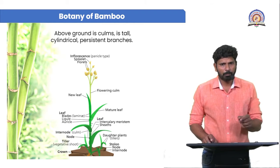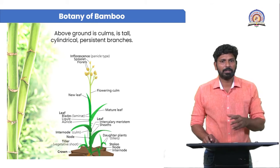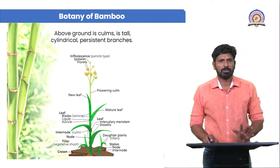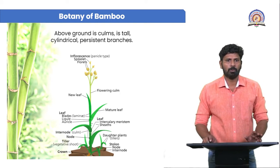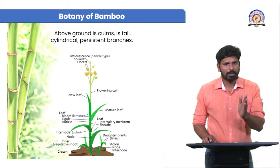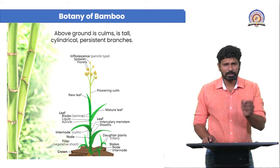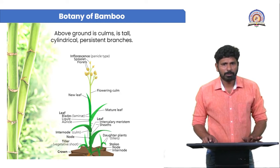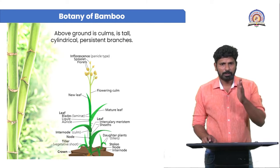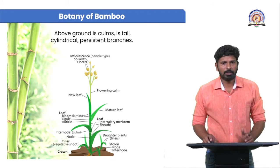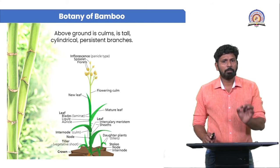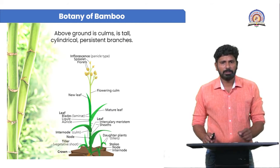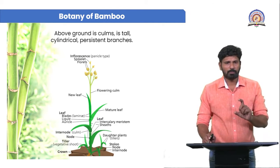There is a flowering culm at the top — the uppermost branch is a flowering culm, which bears the flowers, and these flowers form the inflorescence. The inflorescence is of the panicle type, having spikelets and florets. Below the flowering culm, you can see new leaves arising from the culm. Below that are mature leaves, and at the mature portion there are nodes and inter-nodes. You can also see the daughter plant — small tillers which are the daughter plants of Bamboo. This is the vegetative morphology of Bamboo above ground.